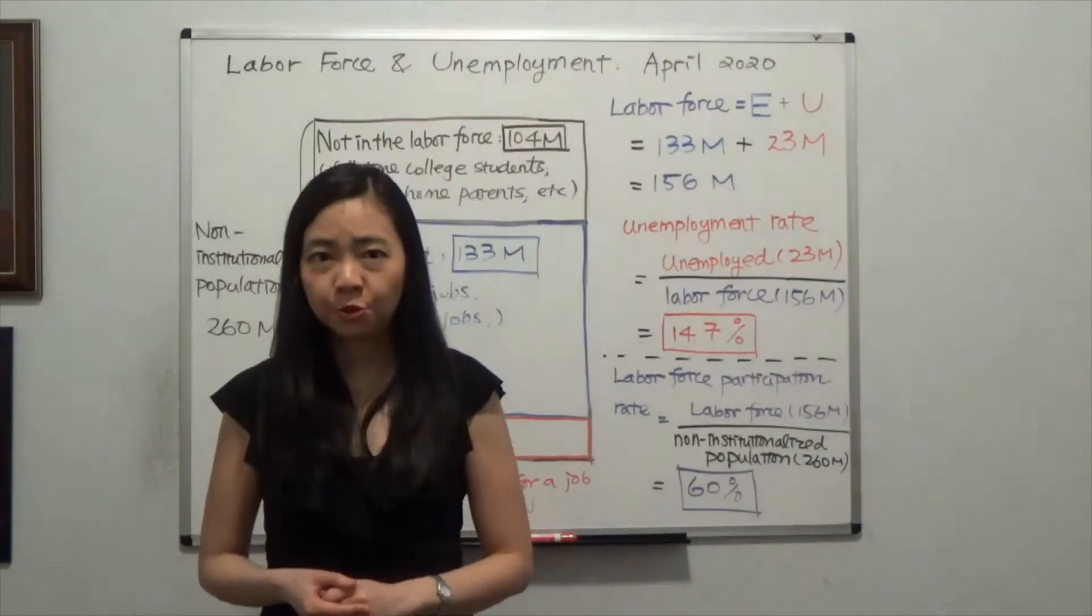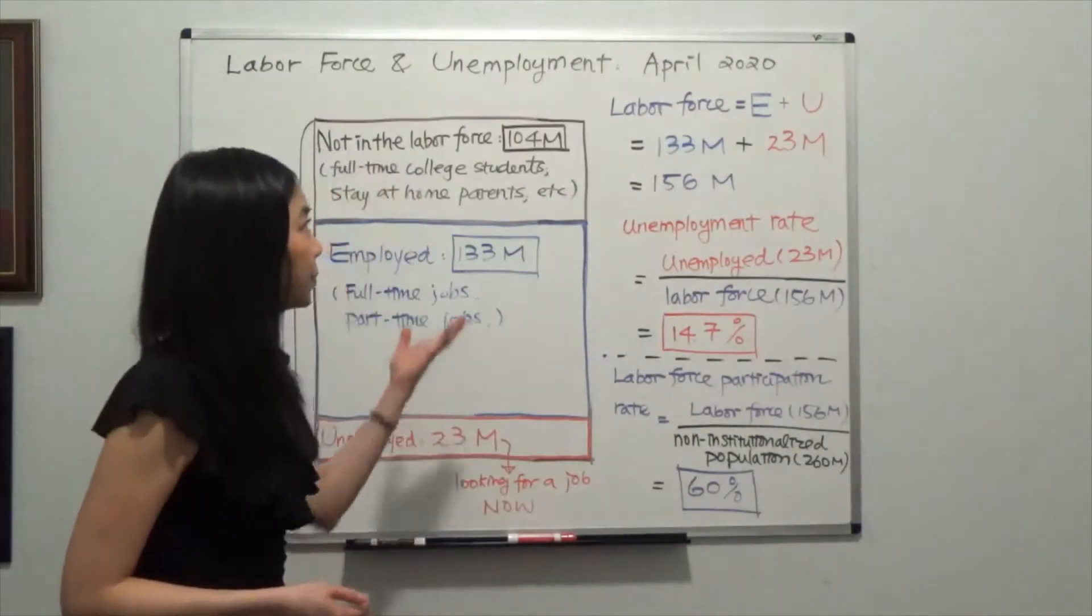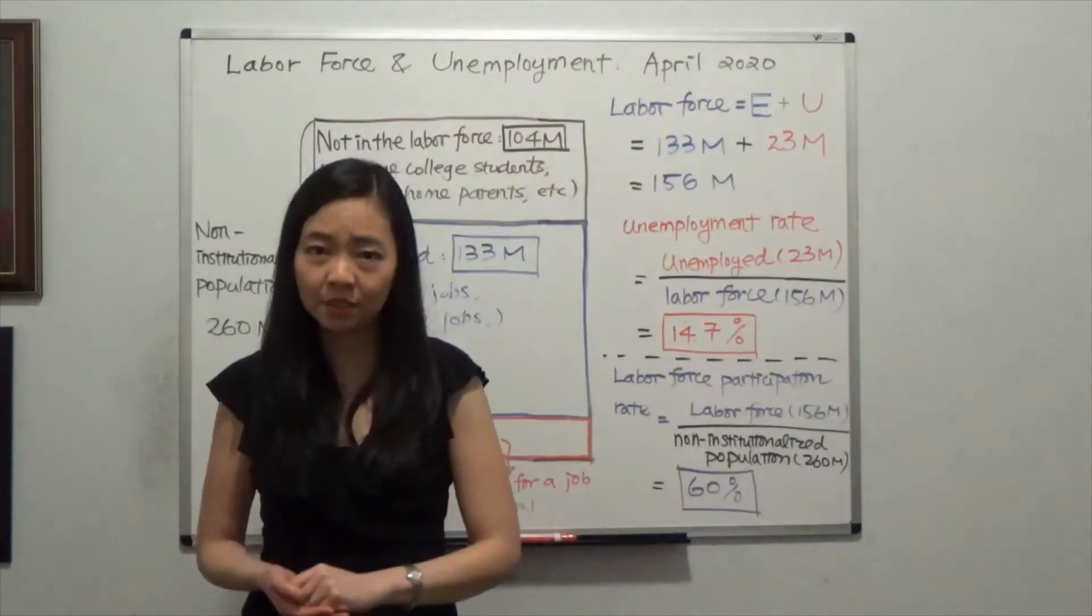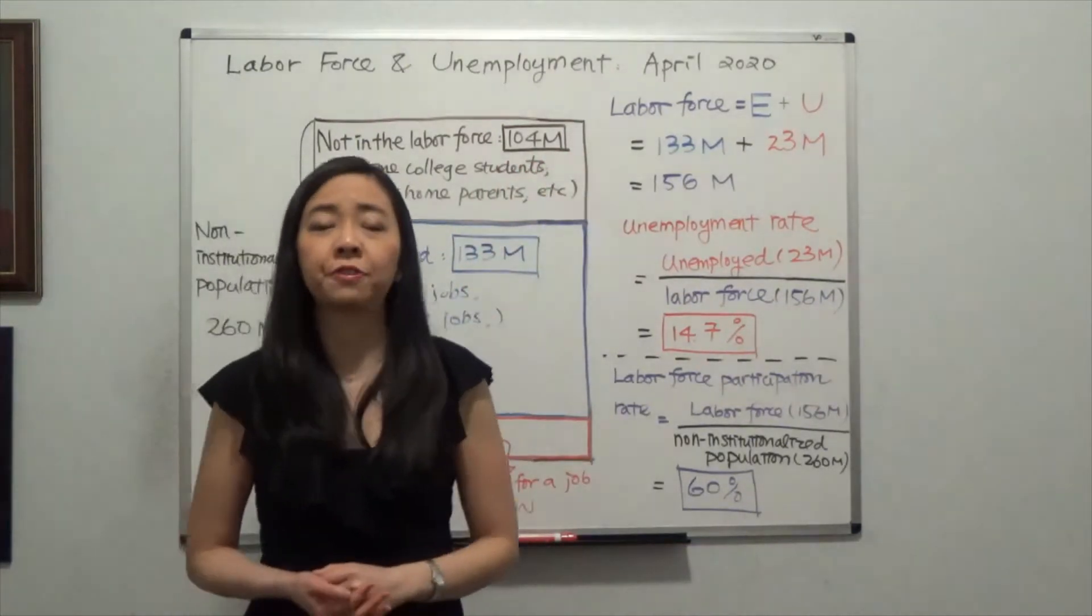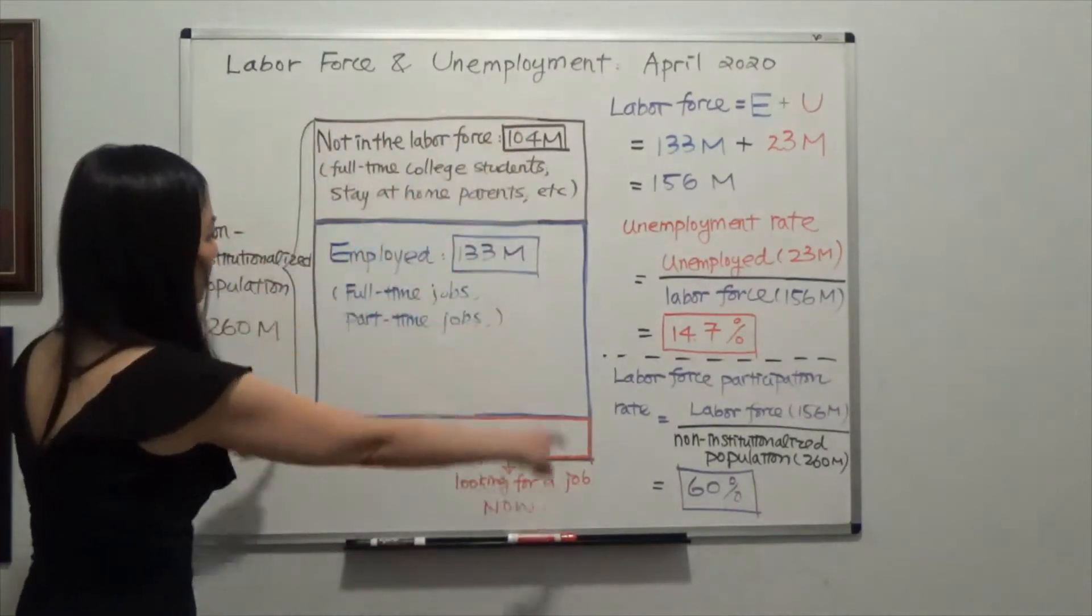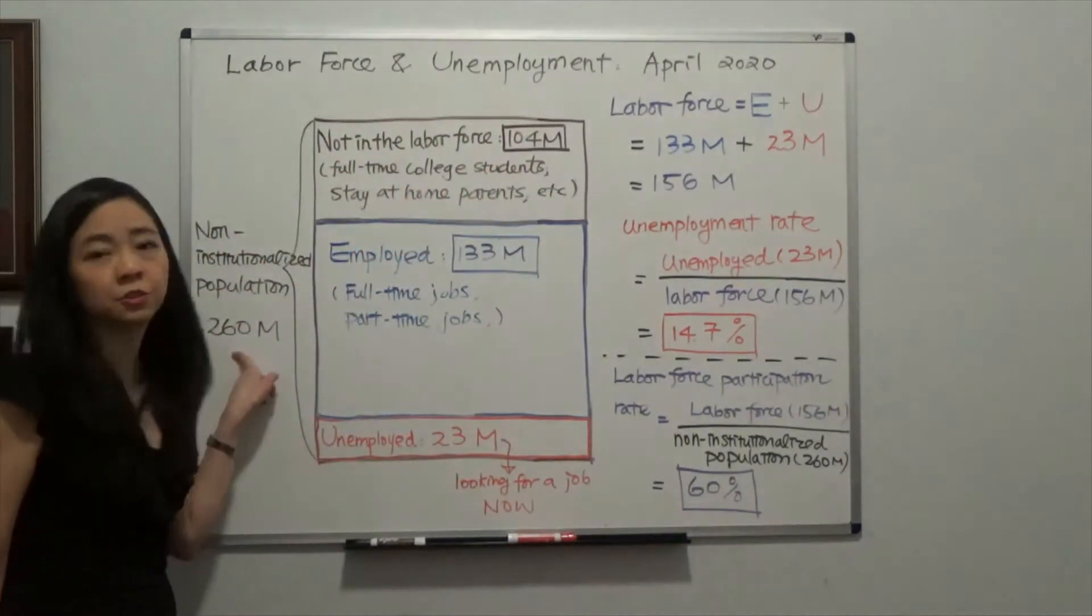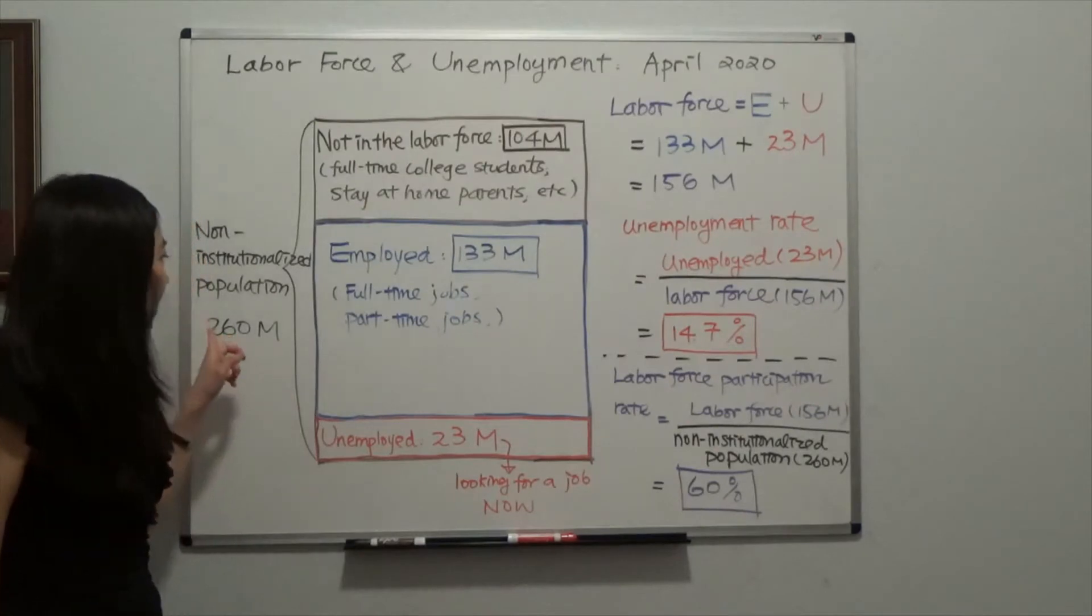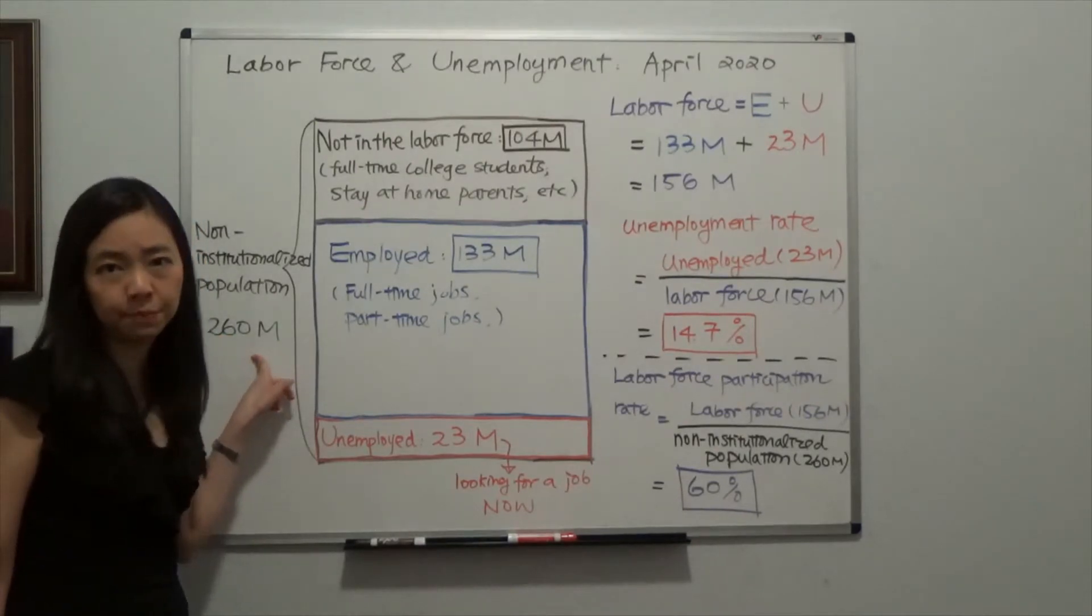I got these numbers from the Bureau of Labor Statistics from April 2020 during the coronavirus pandemic lockdown. First, we're going to look at the non-institutionalized population, which is 260 million people.